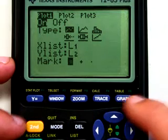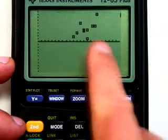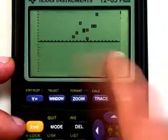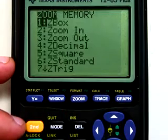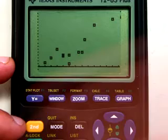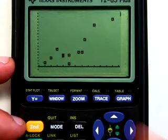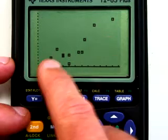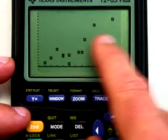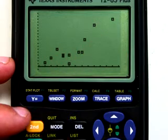little dots here. Now, notice when I hit graph, this is the dimensions of my previous box plot, but I'm going to do zoom nine, and it's going to give me a nice scatter plot there. So as we can see, as x gets bigger, y gets bigger, it kind of has a positive correlation to it or a positive relationship.